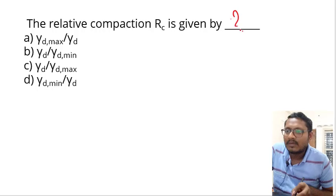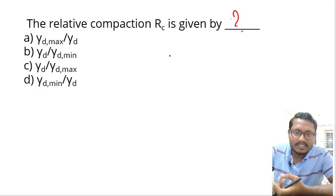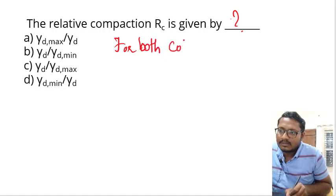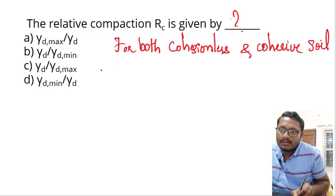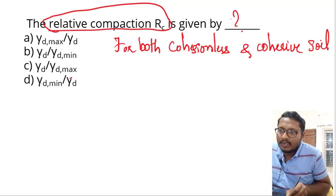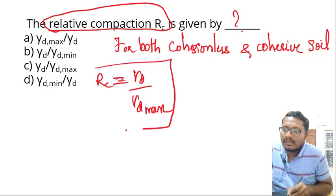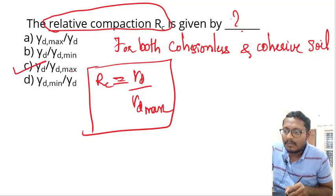The relative compaction RC is given by which formula? Relative compaction is used to find the degree of compactness of both cohesionless soil as well as cohesive soil. For cohesionless soil only, we use the term relative density, but for both cohesionless and cohesive soils, we use relative compaction. It is given by the formula: γ_d / γ_d_max. The correct answer is option C, that is γ_d upon γ_d_max.